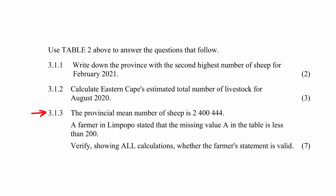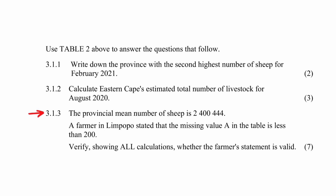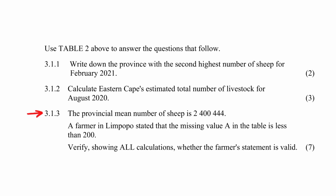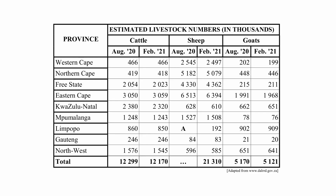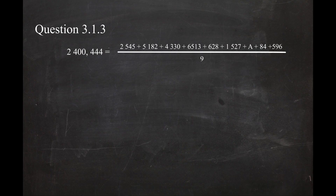In question 3.1.3, you are given the provincial mean number of sheep of 2,400,444. One of the farmers in Limpopo stated that the missing value A in the table is less than 200. You are instructed to verify, showing all calculations, whether the farmer's statement is valid. The mean of 2,400,444 equals the sum of the number of sheep for August 2020 divided by the number of provinces.